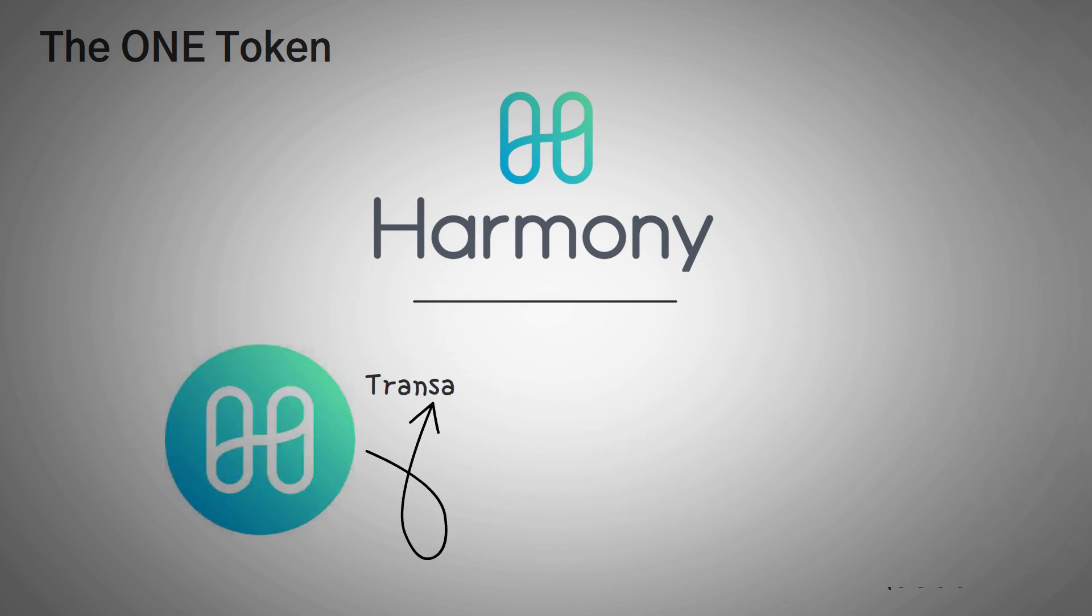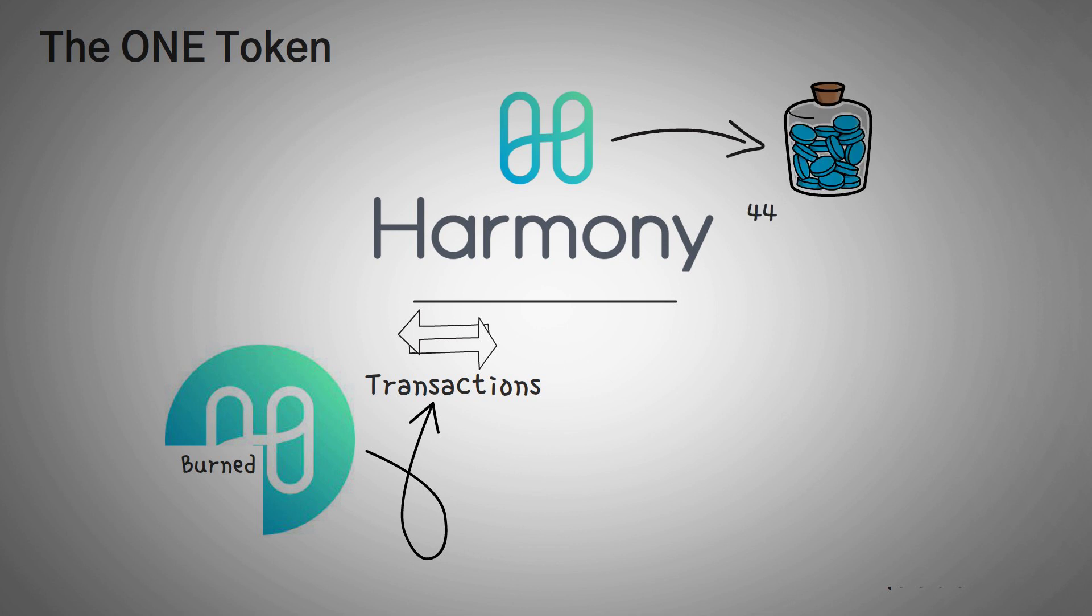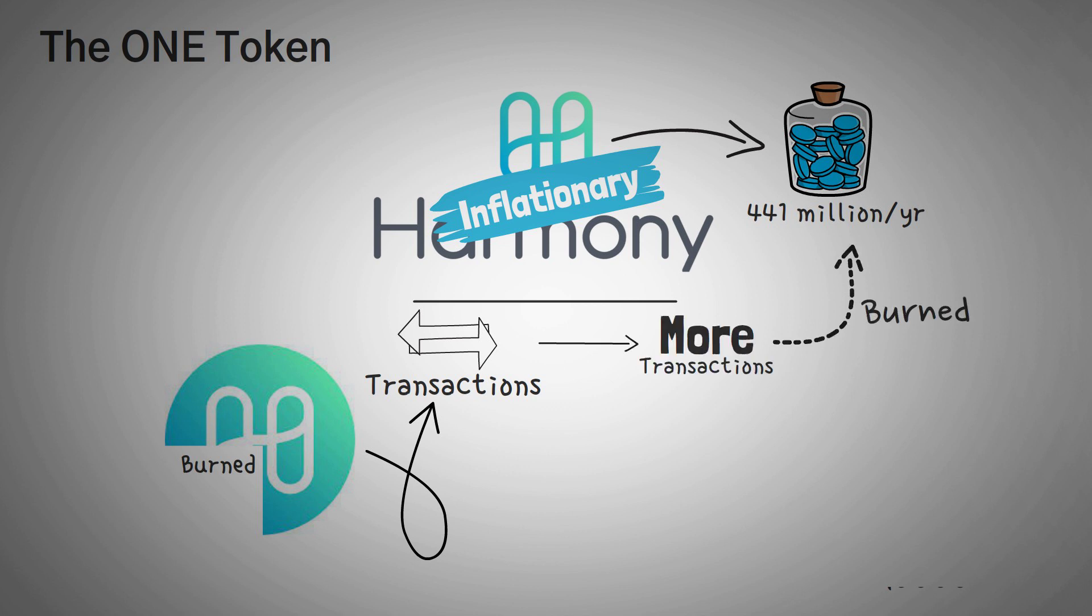Now like many other chains, 1 is used to pay for transactions, and it's burned whenever you make a transaction. But one other interesting thing is that Harmony mints a maximum of 441,000,000 1 tokens per year, which means that the supply of 1 tends to be inflationary. Now it doesn't have to be inflationary, because if there's high enough transaction volume, the newly minted 1 coins would simply be burned in fees, and thus not contribute to inflation.